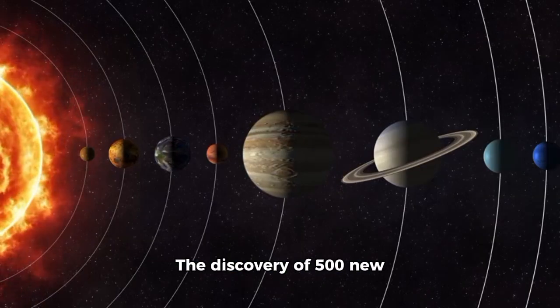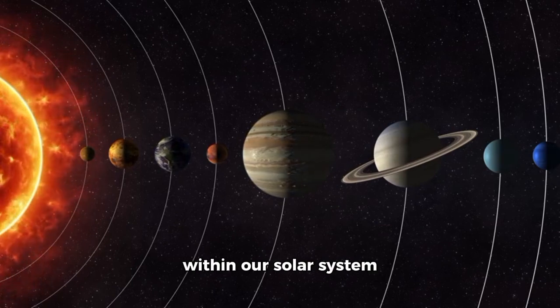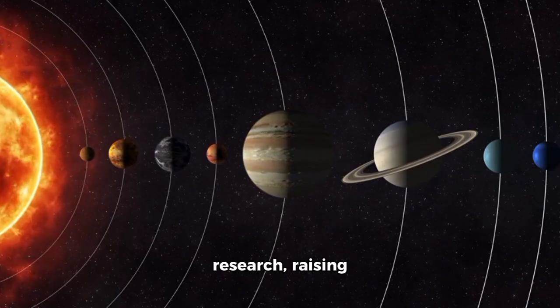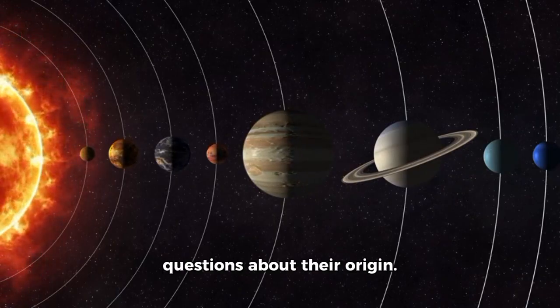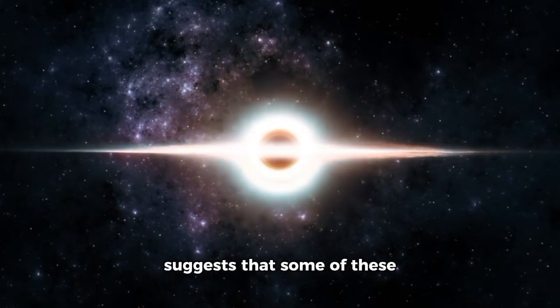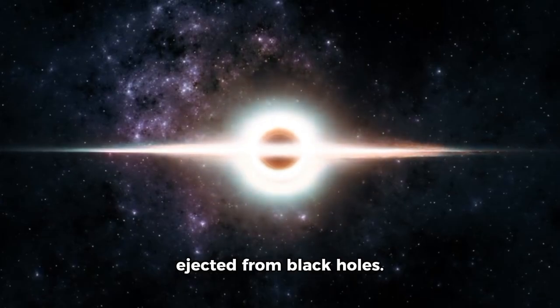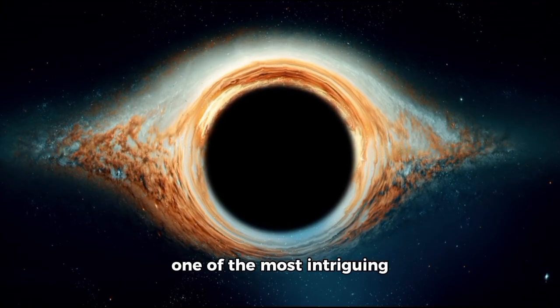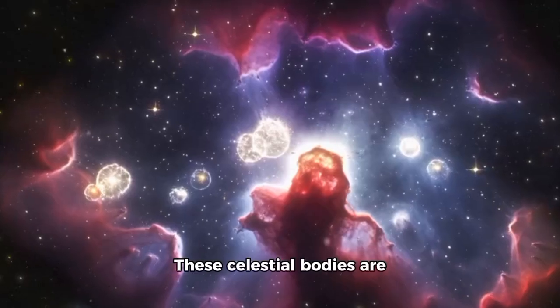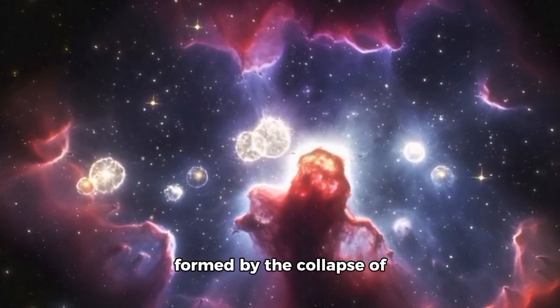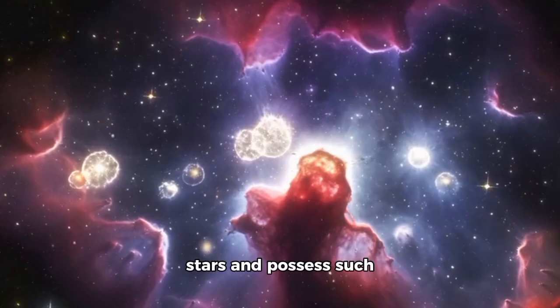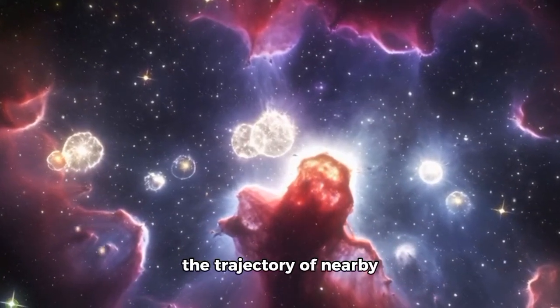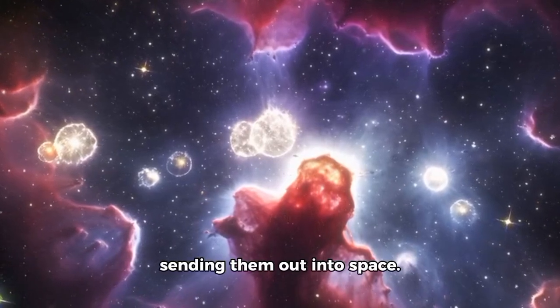The discovery of 500 new and identified objects within our solar system adds a new layer of excitement to our research, raising questions about their origin. One intriguing theory suggests that some of these objects may have been ejected from black holes. Black holes continue to be one of the most intriguing universe-wide phenomena. These celestial bodies are formed by the collapse of stars and possess such powerful gravitational forces that they can alter the trajectory of nearby objects, potentially sending them out into space.